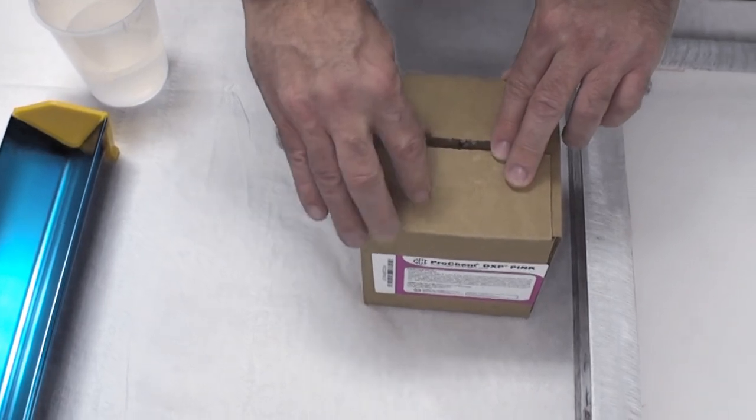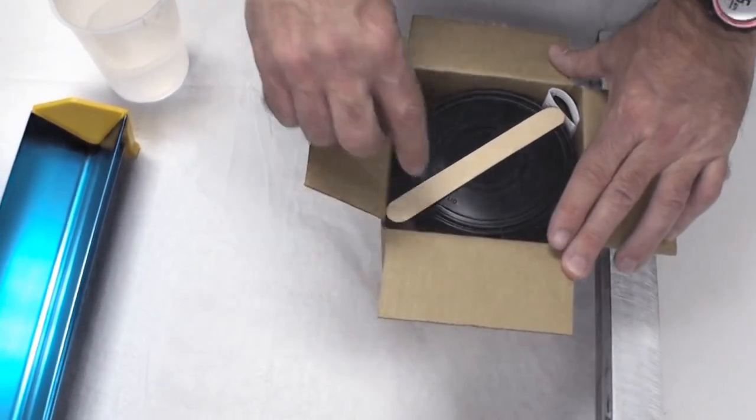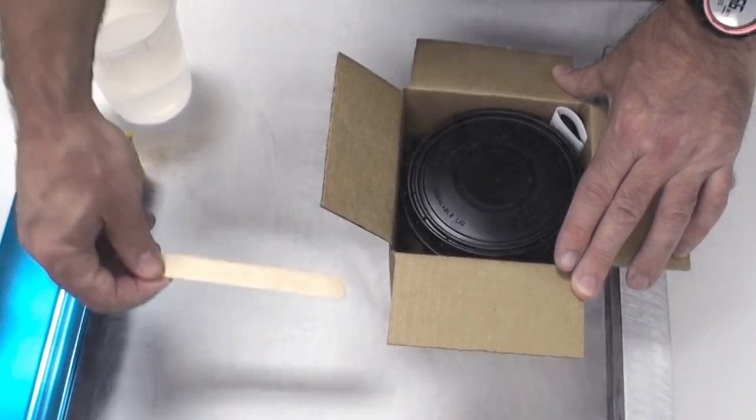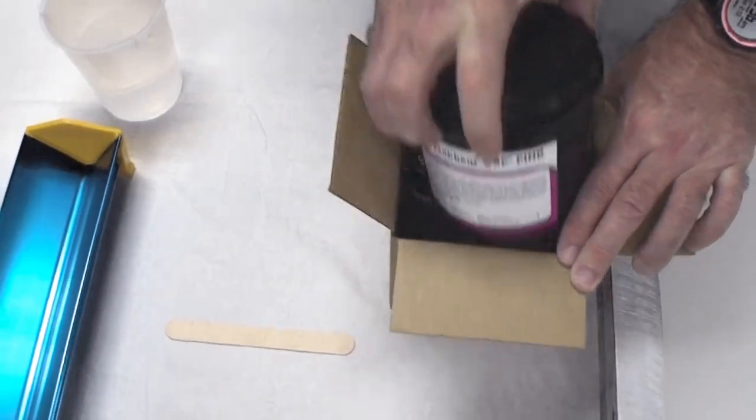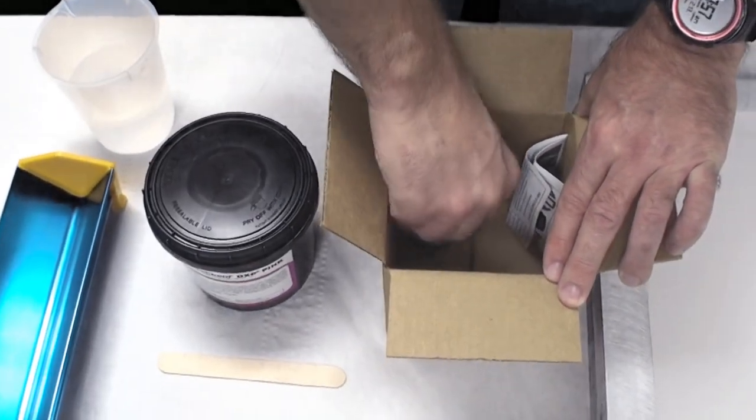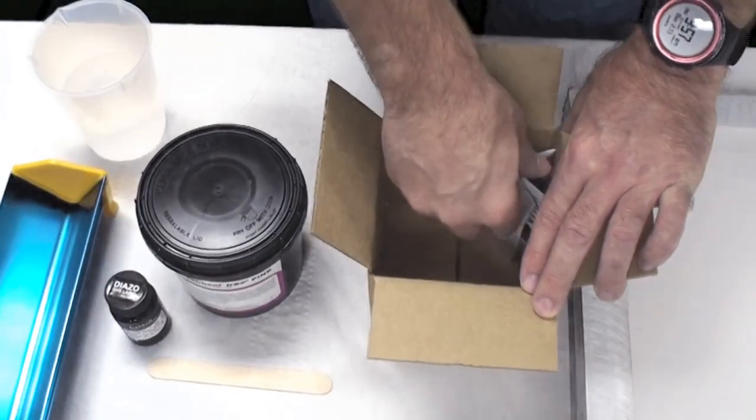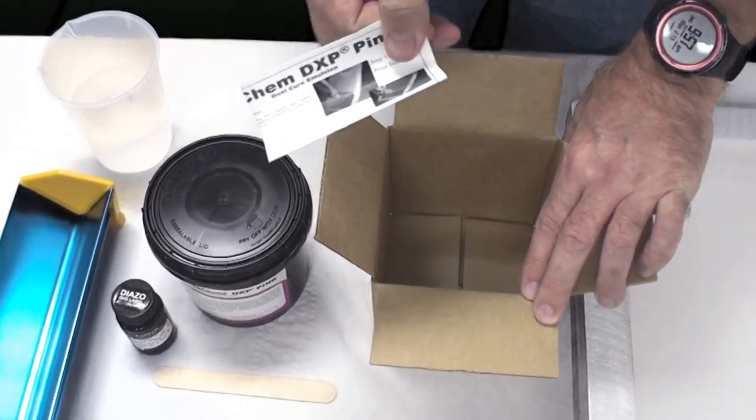Okay, so let's get started. This is DXP emulsion. When we open the box you can see you get a stir stick, the emulsion, a diazo, and the directions.